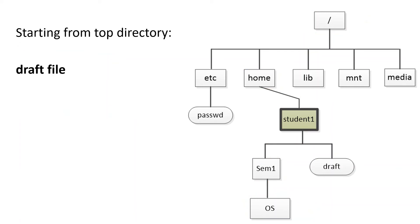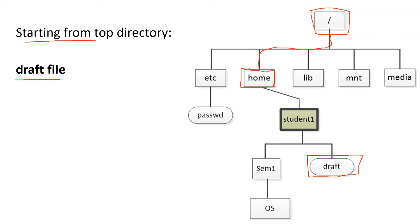For the second example, we find the absolute path of the draft file. Starting from the top, we identify the root directory and locate draft. Following the path from root: slash home, slash student one, slash draft. So the absolute path of draft is slash home slash student one slash draft.